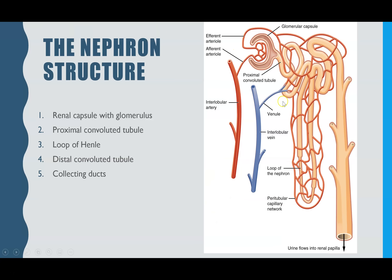Looking at the structure of the nephron, zooming in on one here, you have capillaries surrounding them. Leading into the nephron, you have an afferent arteriole which then branches into lots of smaller capillaries — that is what we call the glomerulus. Those capillaries lie inside a capsule called the renal capsule, sometimes called the Bowman's capsule. The AQA spec calls it the renal capsule, so that's what I'll use. After that, it leads into the proximal convoluted tubule, then into the loop of Henle, then up to the distal convoluted tubule and the collecting duct.